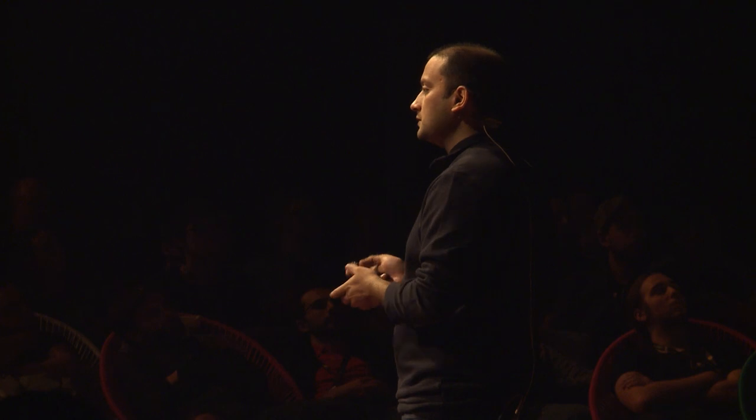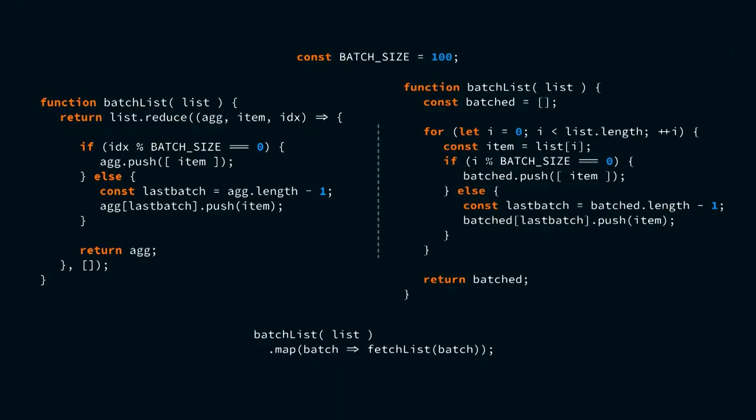But if we use that function like that, it doesn't help because all the calls still go almost at the same time. What we need to do is to essentially wrap each batch into a separate promise and then chain those promises together.